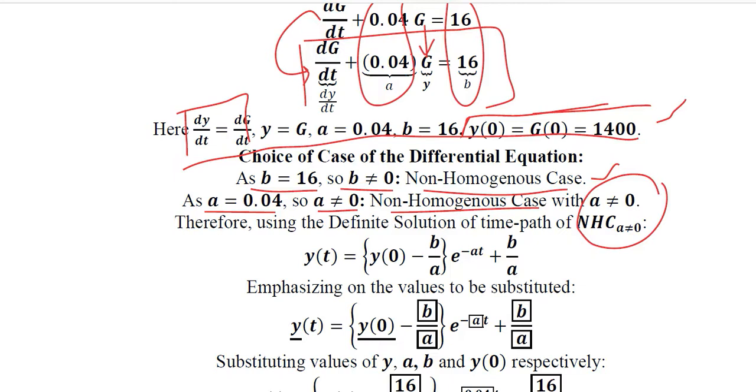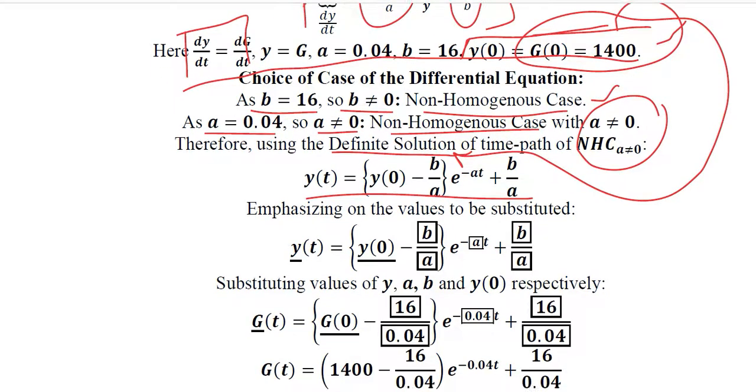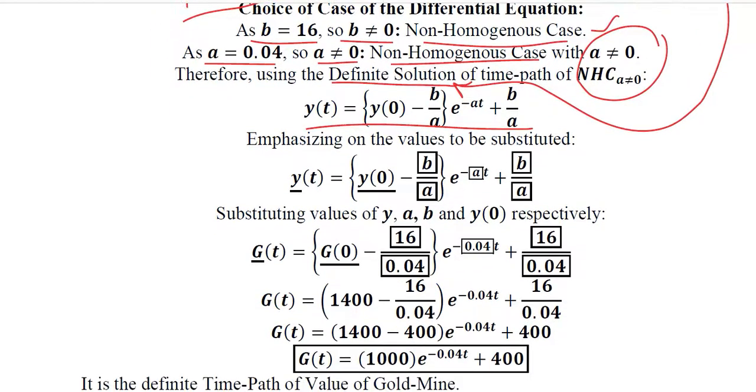We can use this definite solution formula because the initial condition is given. The formula is written here, and then we have the substitution process in which the boxes are guiding us about the substitution as well as these underlines. Then we put the values of b and a, and then this initial condition.